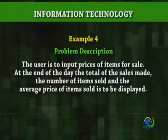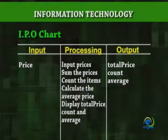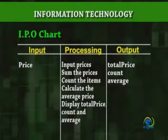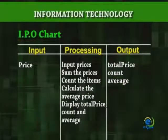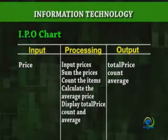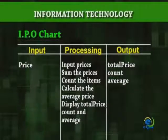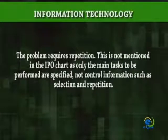Example 4: The user is to input prices of items for sale. At the end of the day, the total of the sales made, the number of items sold, and the average price of items sold is to be displayed. In the input column, we put the name of the input, which is Price. In the processing column: input price, sum the prices, count the items, calculate the average price, and display total price, count, and average. In the output column, we put total price, count, and average. The problem requires repetition. This is not mentioned in the IPO chart, as only the main tasks to be performed are specified, not control information such as selection and repetition.